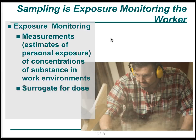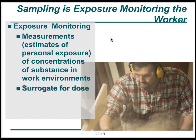Another form of worker monitoring is sampling, where we sample the exposure that the worker receives. Exposure monitoring measures or estimates personal exposure by measuring concentrations of a substance in the work environment. What we measure in the work environment is a surrogate for dose. We truly don't know the actual dose a worker is receiving unless doing biological monitoring or noise sampling with a dosimeter. Air sampling measures exposure around the worker's breathing zone, but the way the worker breathes, eliminates, or biotransforms the material affects the true dose.